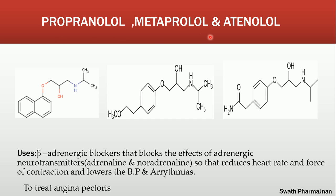Next structure is metoprolol. Metoprolol also contains a side chain similar to propranolol, but the basic nucleus is a phenyl ring — not a naphthalene ring — and at the para position, there is a CH2, CH2, O, CH3 group attached. That is the structure of metoprolol. Atenolol structure also contains a side chain similar to propranolol and metoprolol, and the phenyl ring contains CH2, CO, NH2 — an acetamide group — at the para position.